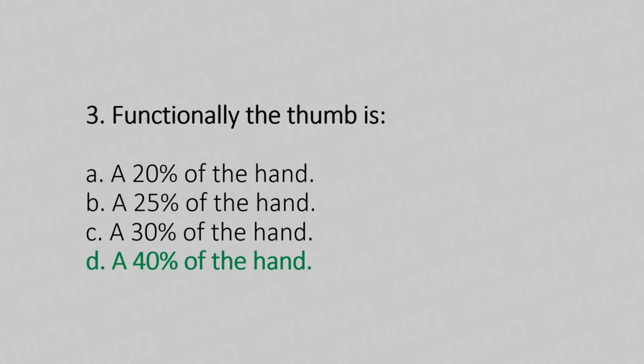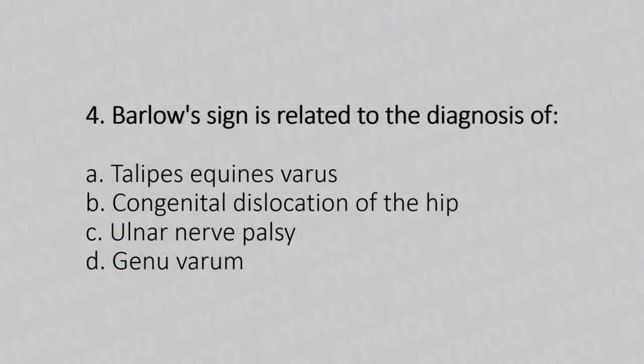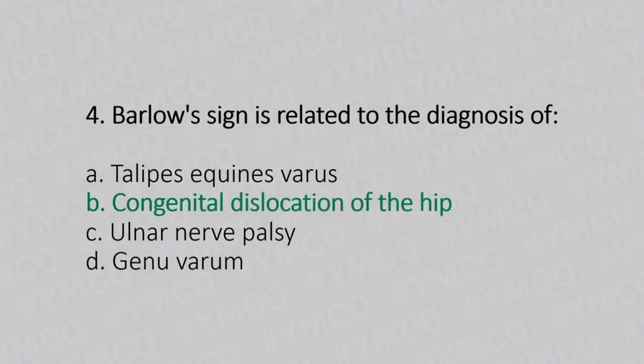Now let's move to question number 4. Barlow sign is related to diagnosis of. Option A: talipes equinovarus. Option B: congenital dislocation of the hip. Option C: Erb's palsy. Option D: genu varum. And the answer is Option B, congenital dislocation of the hip.